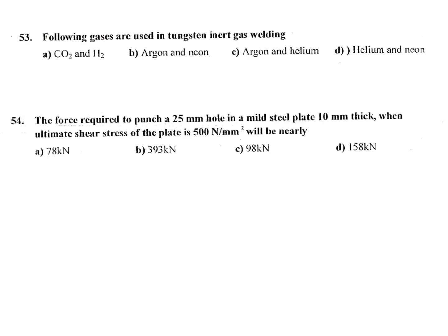Which gases are used in tungsten inert gas (TIG) welding? We are using inert gases: argon and helium. CO2 is used in MIG welding, not TIG. H2 we are not using. Argon and neon — neon we are not using. Argon and helium is correct. Helium and neon — no, we are not using neon. So the answer is argon and helium.